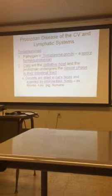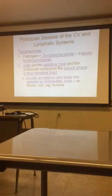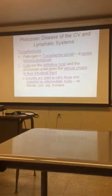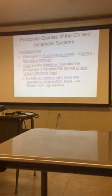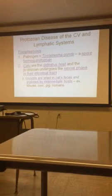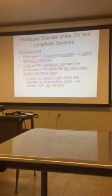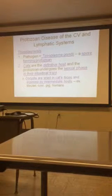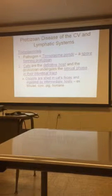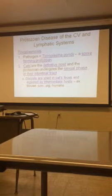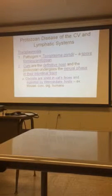Toxoplasmosis is another disease. The pathogen is Toxoplasma gondii, a spore-forming protozoan. Cats are the definitive host, meaning the adult form or sexual phase occurs there. The protozoan undergoes the sexual phase in the intestinal tract of the cat, and then oocysts are shed in the cat's feces. These are ingested by an intermediate host such as a mouse, cow, goose, or human.